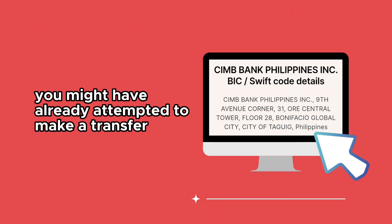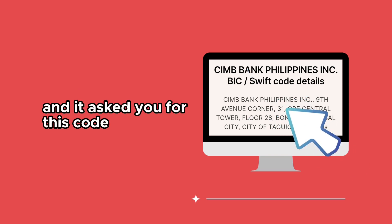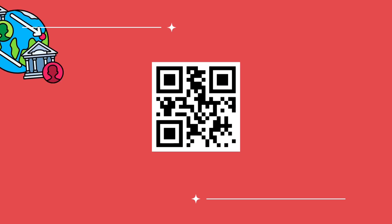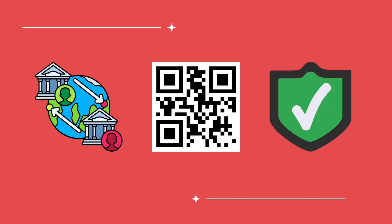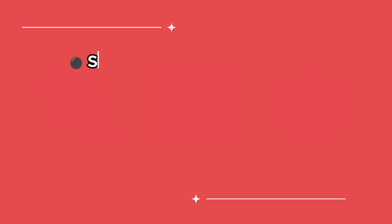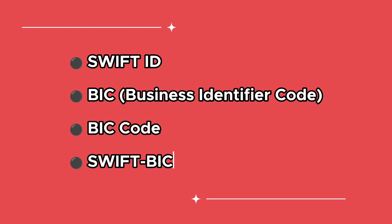You might have already attempted to make a transfer and it asked you for this code. The SWIFT code is basically a unique identifier used to facilitate money transfers between banks accurately and securely. It's also called a SWIFT ID, BIC (Business Identifier Code), BIC Code, and SWIFT BIC.